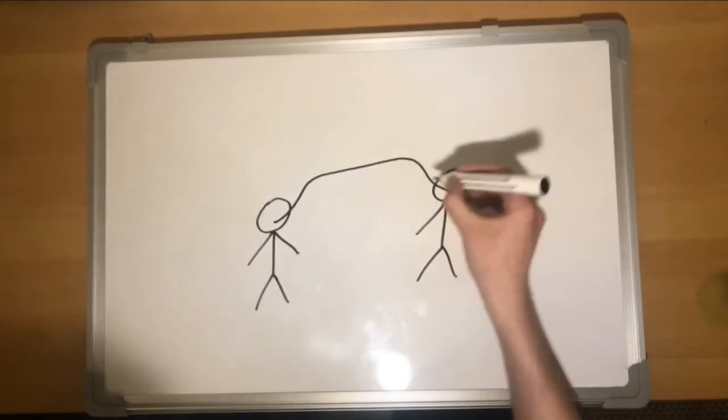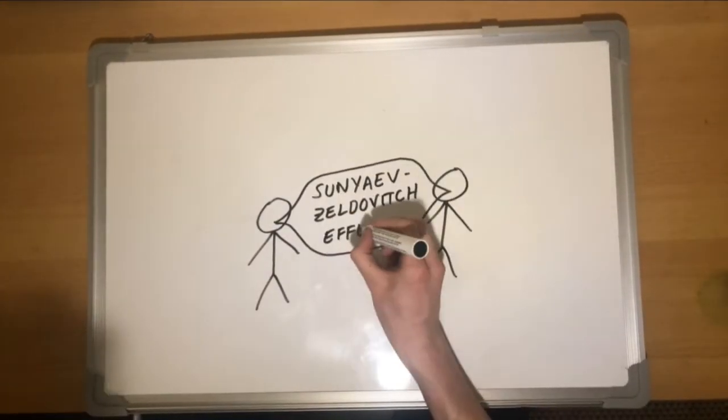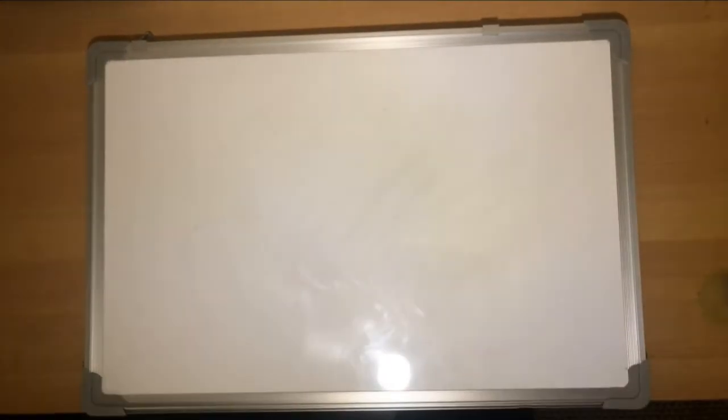Put simply, this effect describes the distortion of the CMBR through the process of inverse Compton scattering.